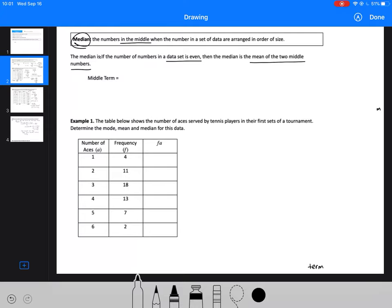We can represent the middle term as (n+1)/2, where n is the number of numbers in a data set. So if n is odd, let's say 13, n+1 divided by 2 is going to give us 7. That means the median is the seventh term, not the number 7.